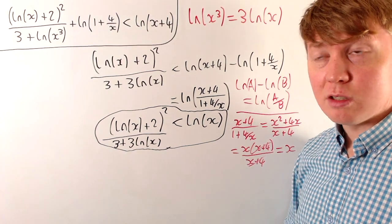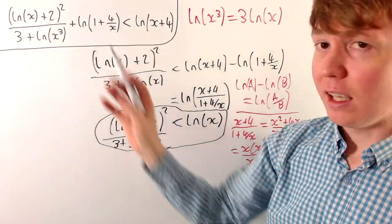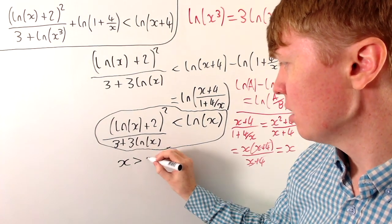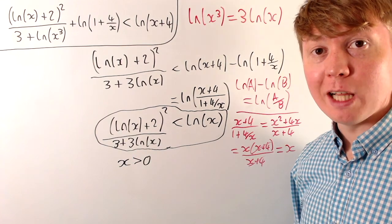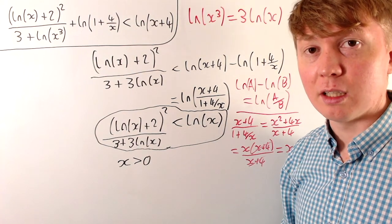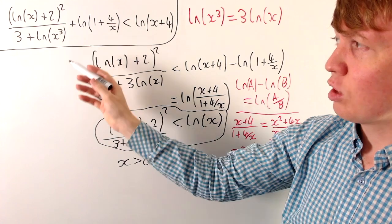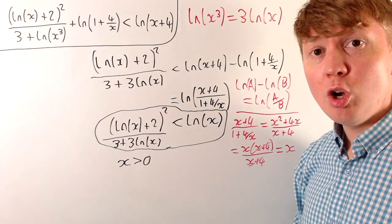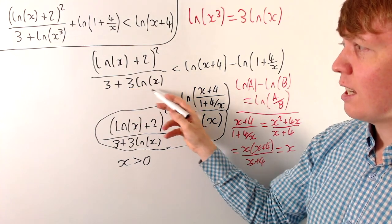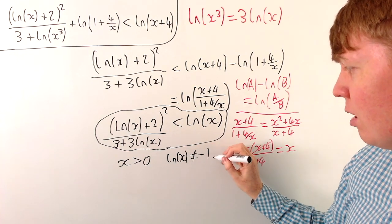Now let's think about which values of x the inequality is valid for. First, ln x requires x to be strictly greater than 0 to be well defined. Looking at the denominator, 3 plus ln(x cubed), we run into problems if the denominator is 0. In the form 3 plus 3 ln x, we get 0 in the denominator exactly when ln x equals negative 1, so we need ln x not equal to negative 1.